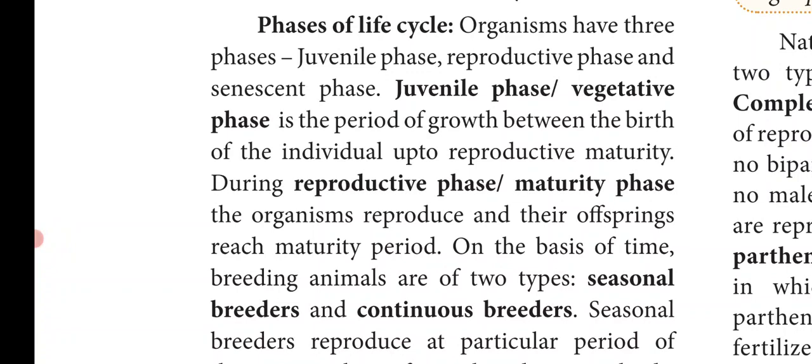Organisms have three different phases: the juvenile phase, reproductive phase, and senescent phase. In animals, we call it the juvenile phase, and in plants, we call it the vegetative phase.